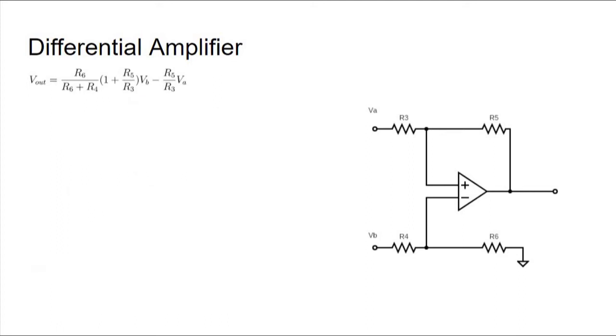We went from that big equation to Vout equals R6 over R4 times Vb minus R5 over R3 times Va. But since we made the ratios equal, we can change this further to this nice simple equation: Vout equals R5 over R3 times the quantity Vb minus Va. So this whole differential amplifier reduces to just this with the appropriate resistors.